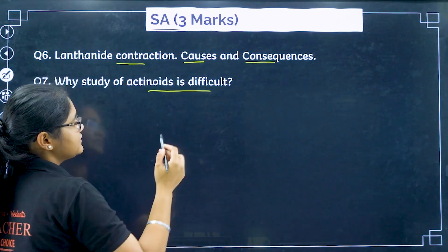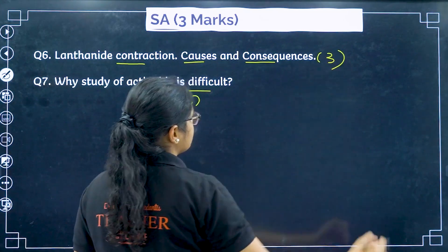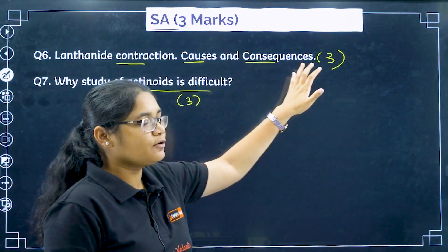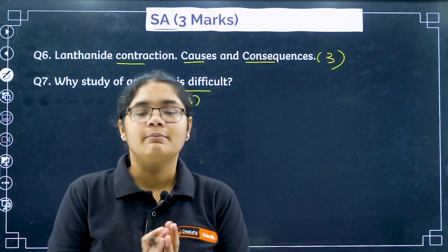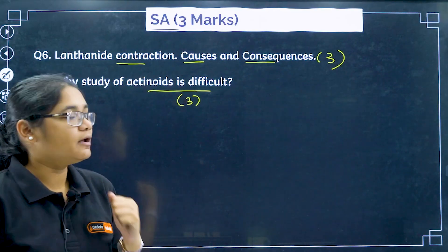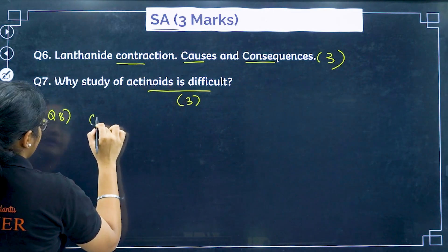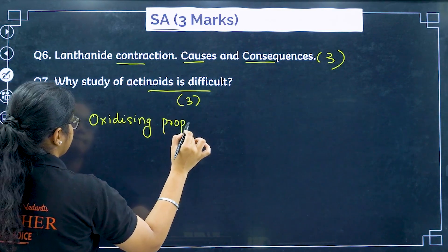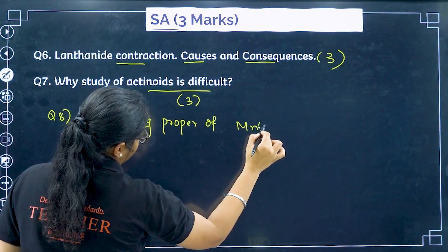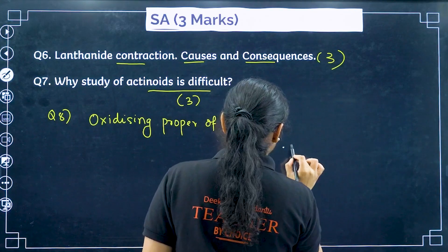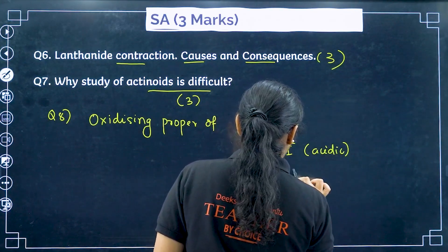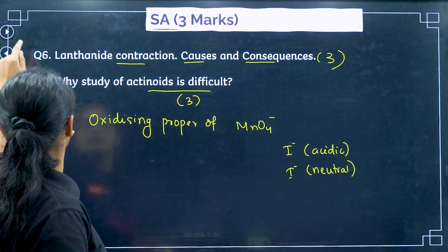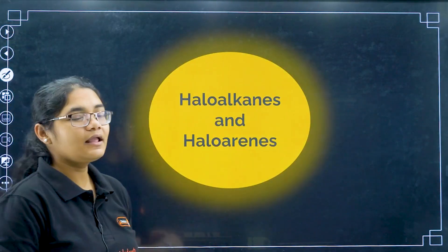Lanthanide contraction — its causes and consequences — is again a very important question. Why the study of actinoids is difficult can also be a three-marker question. If only the contraction and its cause are asked, that can be a two-marker; contraction with one consequence can also be a two-marker. One more thing to prepare: the oxidizing property of MnO₄⁻ — especially for I⁻ in acidic medium and I⁻ in neutral medium. Please revise this.